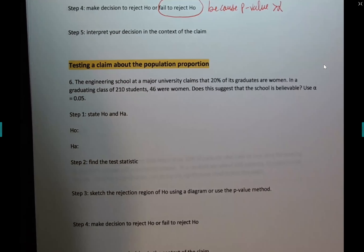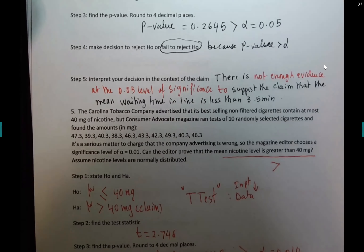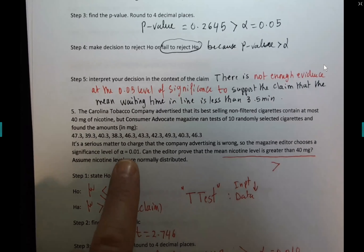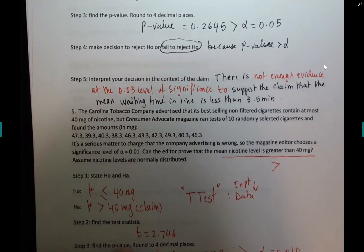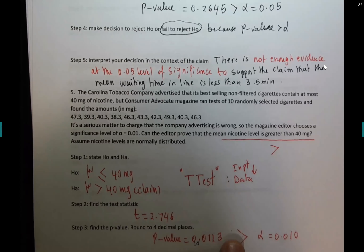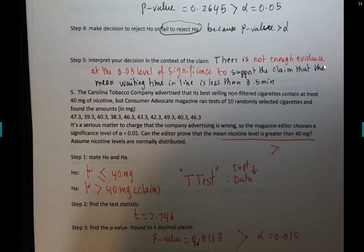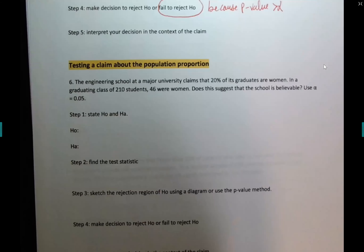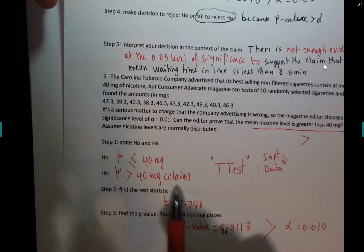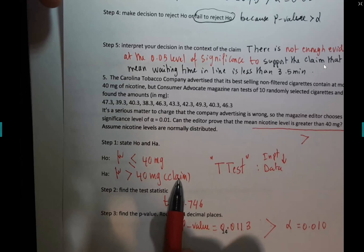You should know this by heart now. I might on the test give you the same question but instead of alpha = 0.01, make it 0.05. If alpha is 0.05, what will happen? You end up with less than sign — alpha is very important in what you compare to — and you end up rejecting H0. The value of alpha changes the entire problem.